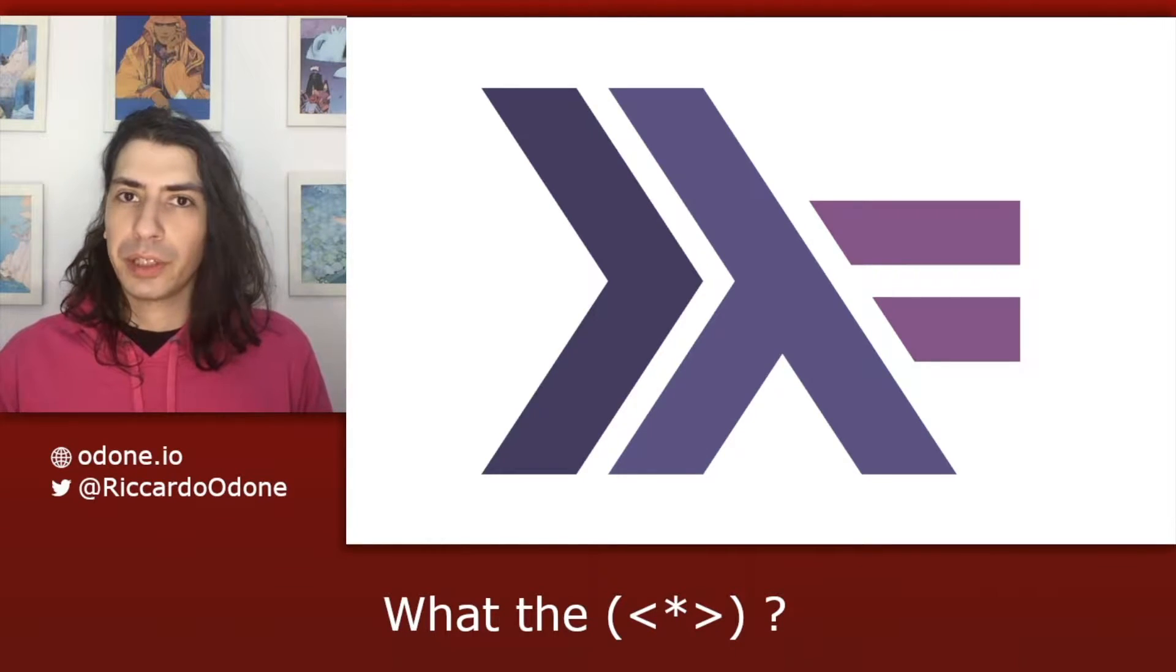Cool, today we're going to take a look at applicative functor in Haskell. In particular, we're going to take a look at the applicative functor's sequential application operator, aka asterisk in angle brackets.